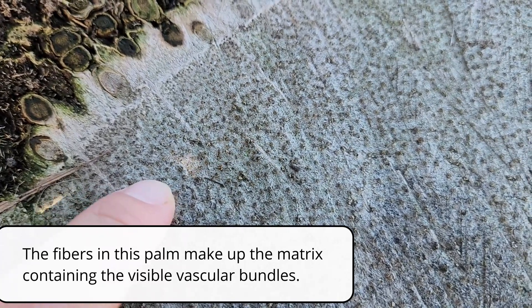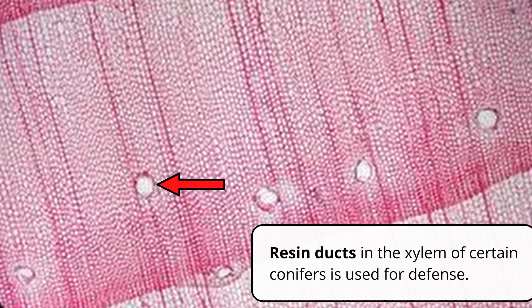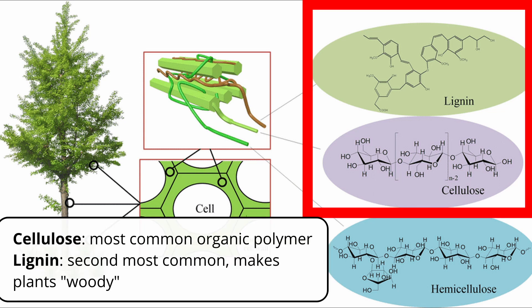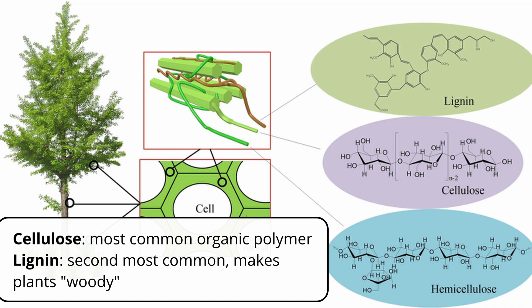In addition to transporting substances, water, and storing materials, xylem also supports a tree and aids in the defense process. The cell walls of xylem are primarily made up of lignin and cellulose — the basic building materials of these cells. Together, they make up to 85% of the dry mass of a woody plant. This will come up again in discussions about wood decay, because certain decay fungi can only break down lignin or cellulose.